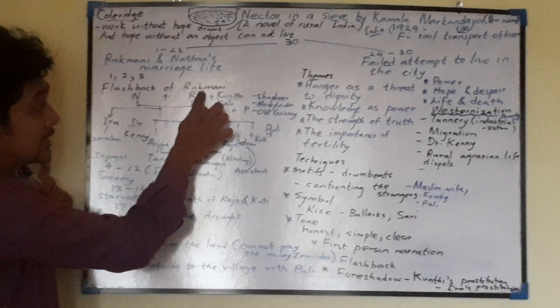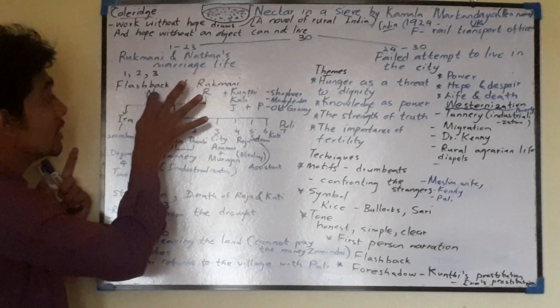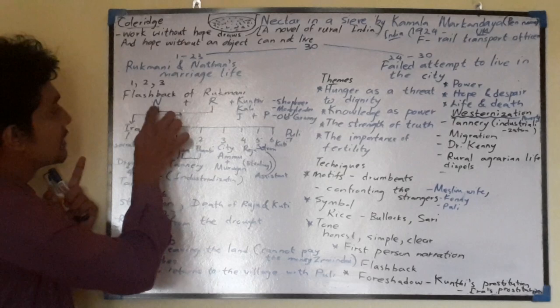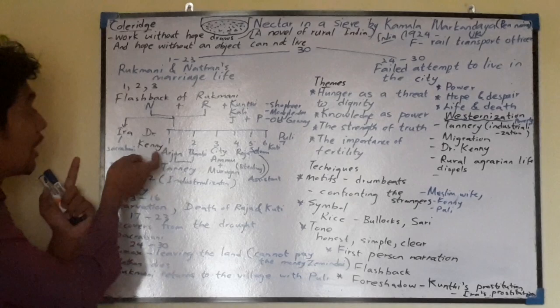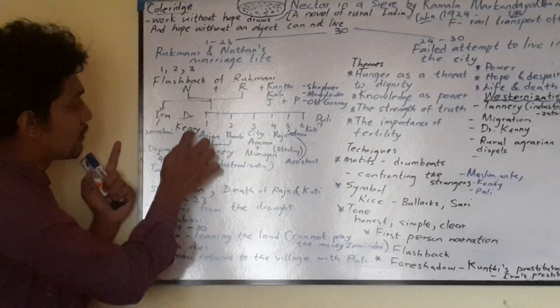Rukmani was the daughter of the headman. She was given in marriage to Nathan, because in Indian society it is very difficult to arrange a marriage without proper dowry. Nathan was a tenant farmer. From their union, Ira was born. Ira was infertile, but after treatment she delivered a child called Sacrabani. Dr. Kenny was the introduction of westernization for the society.